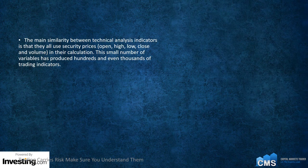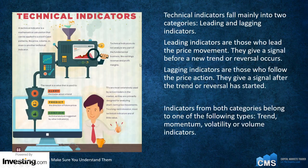The main similarity between technical analysis indicators is that they use security prices — open, high, low, and close — as well as volume in their calculations. This small number of variables has produced hundreds and even thousands of trading indicators. These technical indicators fall mainly into two categories: leading and lagging indicators.